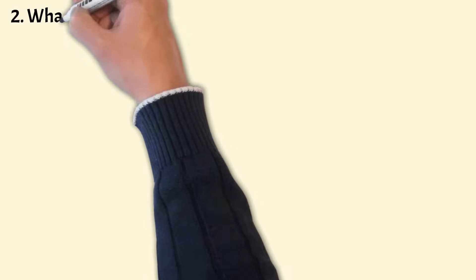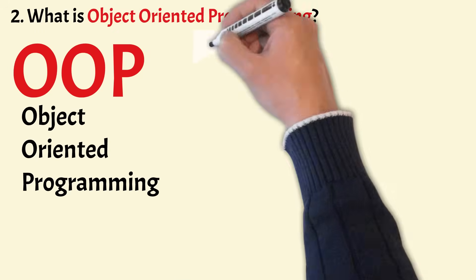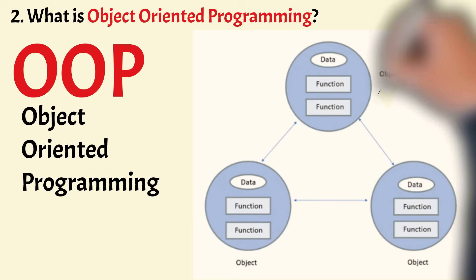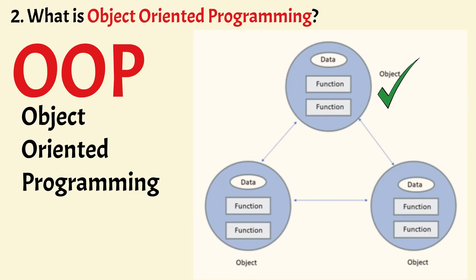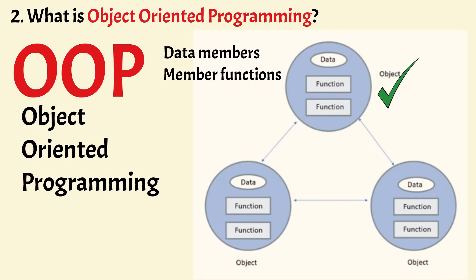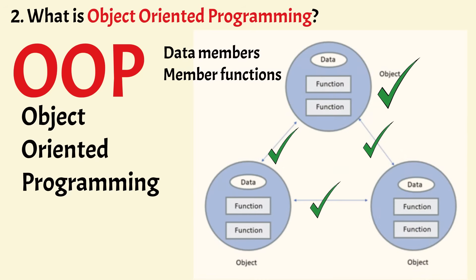Now coming to the next one: what is object-oriented programming? Object-oriented programming is a style of programming where the data items and the functions that operate on those data items are grouped into a unit known as an object. In C++, the data items are called data members and the functions are called member functions. In object-oriented programming, a program typically consists of a number of objects which communicate with each other by calling each other's member functions.